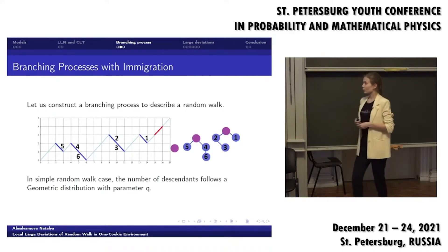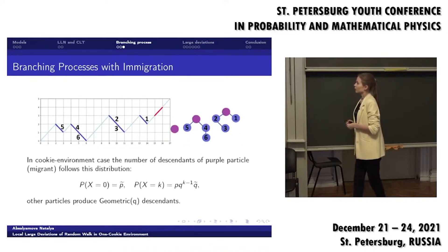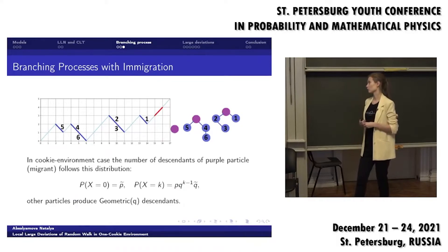So let's continue. In simple random walk case, the number of descendants of each particle, migrant type, the simple descendant, will be geometrically distributed with parameter q. And in one-cookie random environment, we can see that we'll change the distribution of descendants of migrants. It will be like on the slide. And for other descendants, distributions remain the same.